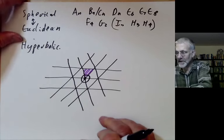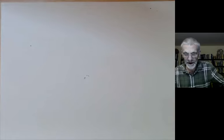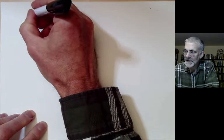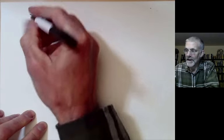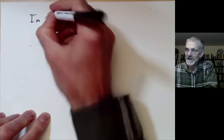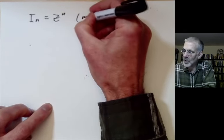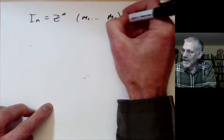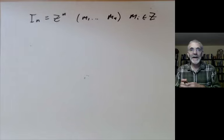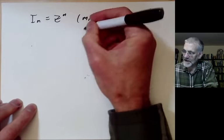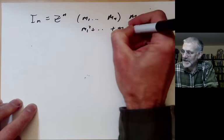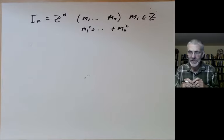I'll give two examples of spherical reflection groups needed later. First, we take the lattice I_n, which is just Z^n — all vectors (m_1, ..., m_n) with m_i integers — with the obvious inner product, so the norm of a vector is m_1² + ... + m_n².